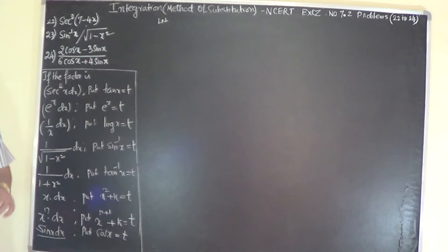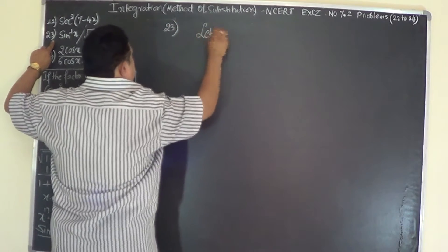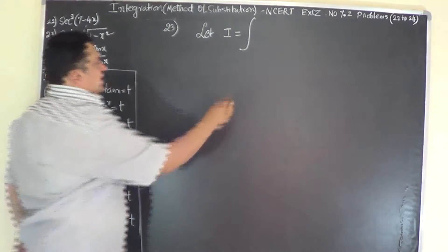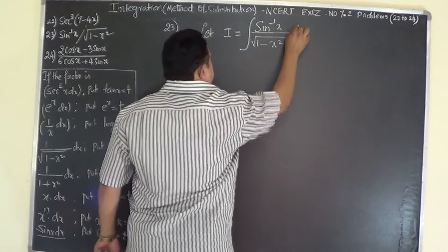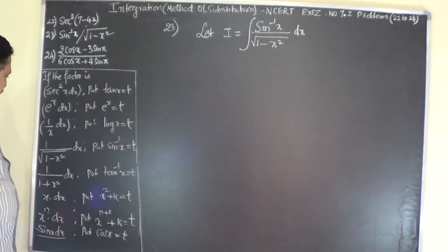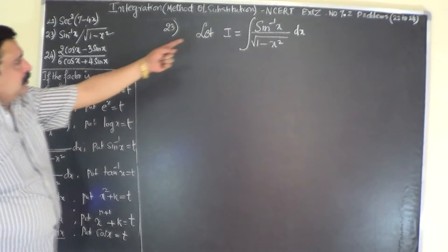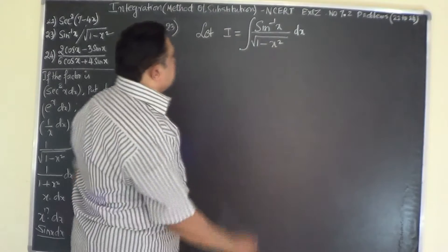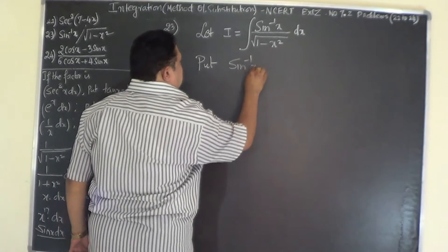Problem number 23: Let I = integral of sin⁻¹(x) / √(1 - x²) dx. If there is a factor like 1/√(1 - x²) dx in the integral, the substitution is to put sin⁻¹(x) = t. Here we have 1/√(1 - x²) dx, so the straightforward substitution is to put sin⁻¹(x) = t.